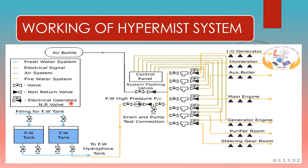The diagram shows solenoid-operated non-return valves and nozzles fitted at each zone: the IG generator, incinerator, auxiliary boiler, main engine space, generator engines one, two, and three, purifier room, and steering gear room. System flushing valves and an air blowing line with an air port are also shown, along with the main control panel.